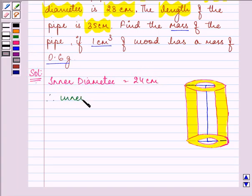Therefore, the inner radius that will be denoted by a small letter r will be half of it. That means 12 cm.